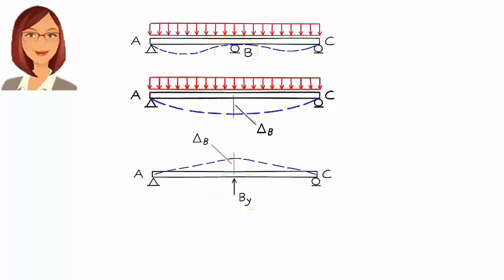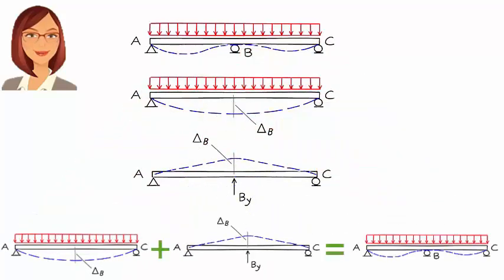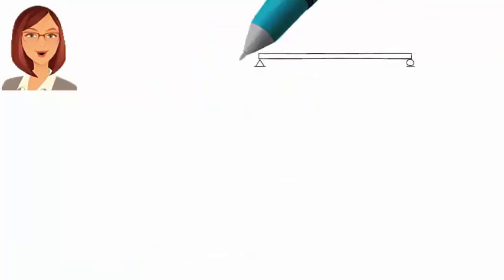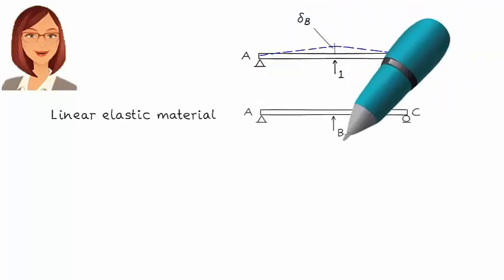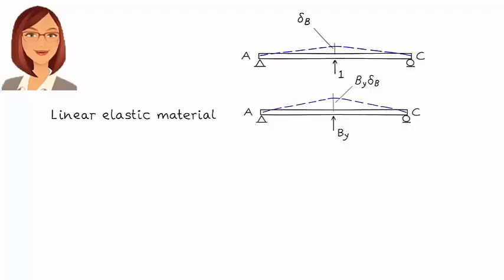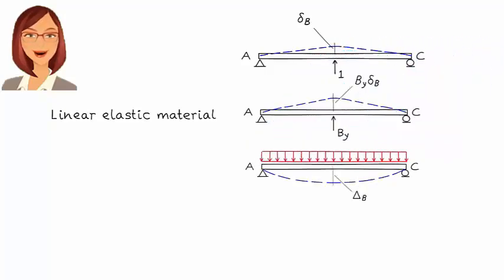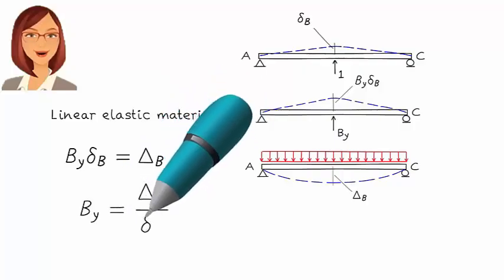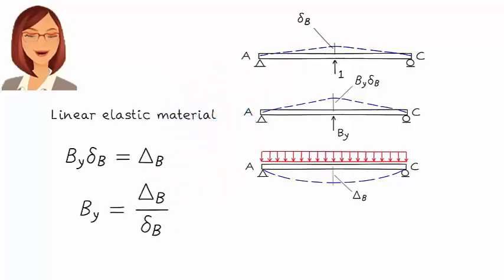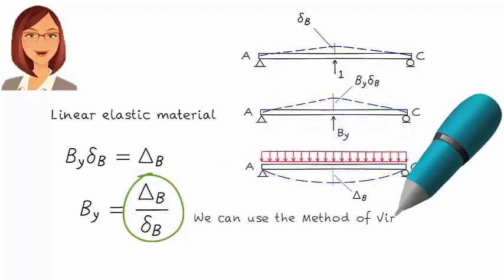Put it differently, this plus this gives us this. Let's write the equation that models this process. We are going to denote the upward deflection of the beam under a unit concentrated load at B as delta_B. Assuming linear elastic material, the upward deflection of the beam due to a load with magnitude By can be written as By times delta_B. And since the vertical downward deflection at B under the distributed load is delta_B, we can write By equals delta_B over delta_B. To calculate By, we need to calculate the displacements in the numerator and denominator, which can be done using the method of virtual work.